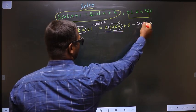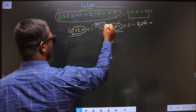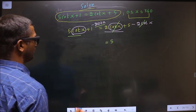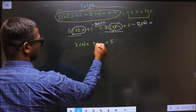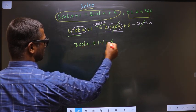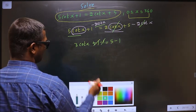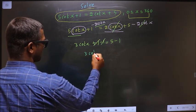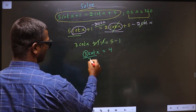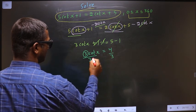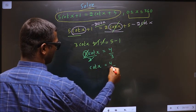So here this cancels out. 5 cot x minus 2 cot x will result in 3 cot x plus 1. Now to remove plus 1, you subtract 1 on both sides. So we get 3 cot x equal to 4. Now to remove this 3, you divide by 3. So I get cot x equal to 4 by 3.